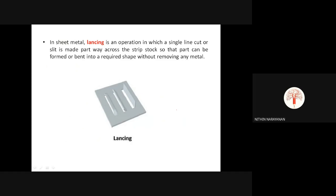The next operation is lancing. In sheet metal, lancing is an operation in which a single line cut or slit is made partway across the strip, so that part can be formed or bent into a required shape without removing any metal. There is no metal removal in lancing.